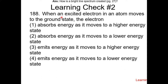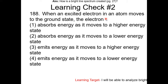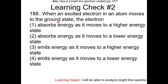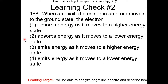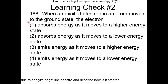Learning check number two: when an excited electron in the atom moves to the ground state, the electron does what? Pause the video and resume once you have the answer. Since it's an excited electron moving back to the ground state, it must have lost energy and gone to a lower energy state, because the ground state is the lowest possible energy. So the answer is four.